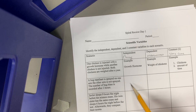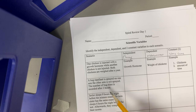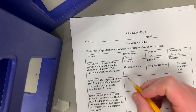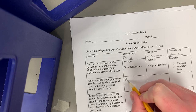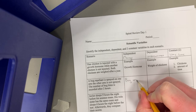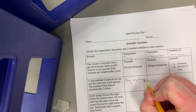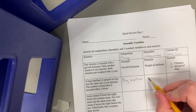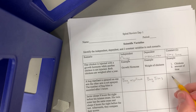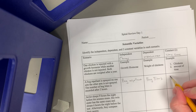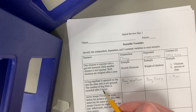For this one we're looking at a bug repellent that is sprayed on one arm, while the other arm is not sprayed. The number of bug bites is recorded after two hours. So the thing that we are changing is the bug repellent, and then the thing that we are measuring is bug bites. One of our constants is time because it says two hours.